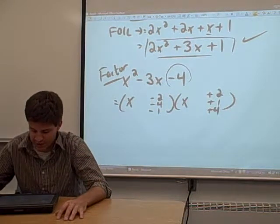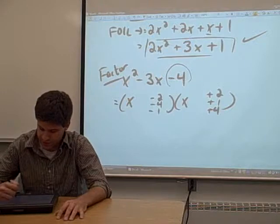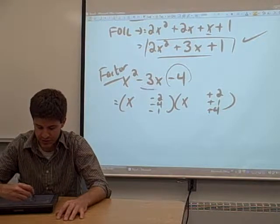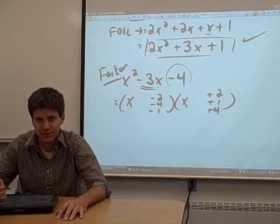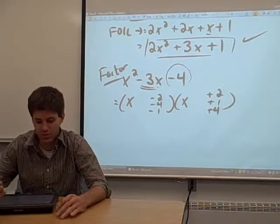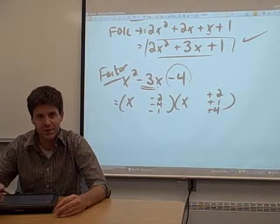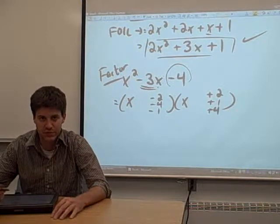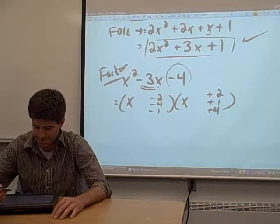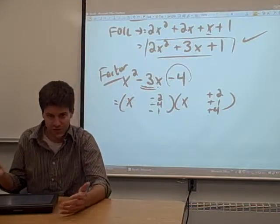Now the question is which one of these possibilities is going to give us a middle term of negative 3x. This just takes practice. Once you do a lot of these, you'll be able to see it right away. For now, you might want to just try to multiply a few of them out and see if it works. If you do that, let's just try one for example.